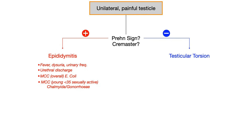For epididymitis — because it's an "-itis," it's inflammation of the epididymis — this is usually an infectious cause. So you're going to look for other signs suggestive of infection: fever, dysuria, increased urinary frequency, and urethral discharge.